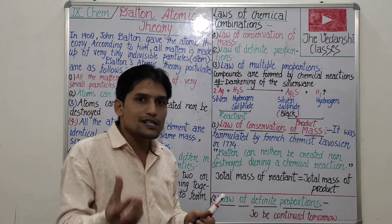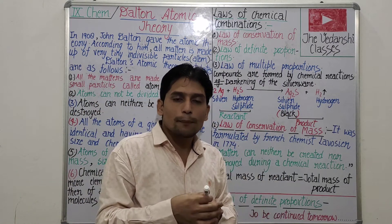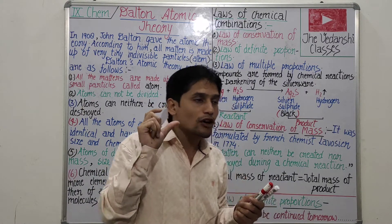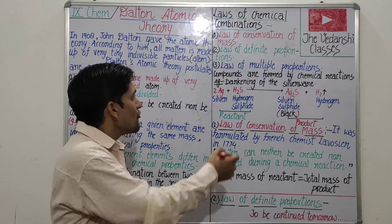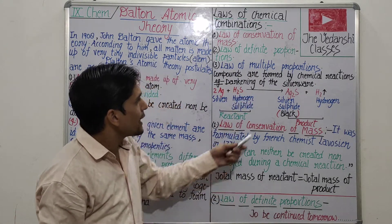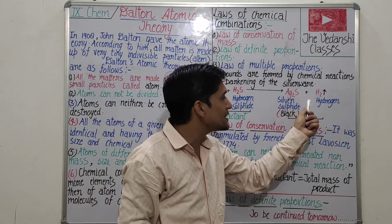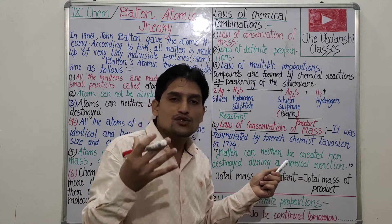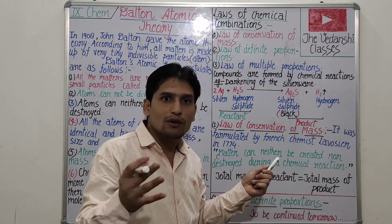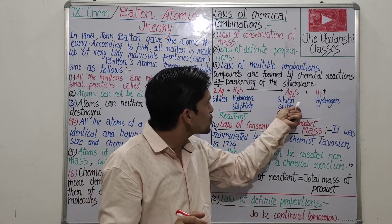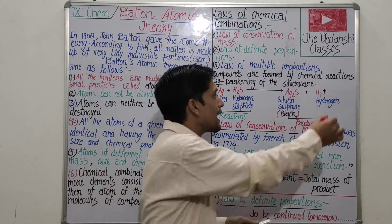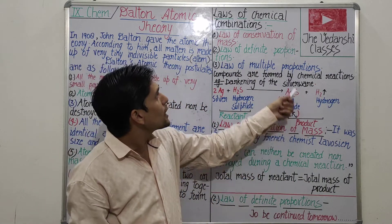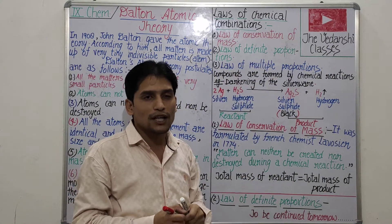For example, if we look at silverware, it will turn black and tarnished — that is also the result of a chemical reaction. When silver reacts with hydrogen sulfide, it forms silver sulfide, which is black in color. That is why silver jewellery and other things tarnish. So all reactions are governed by certain laws called laws of chemical combinations.